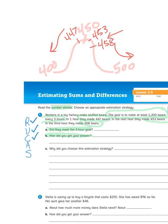So, when I look at those three groups of numbers, 447, 453, and 458, I can see that two of those numbers would round up to five, and one of those numbers would round down to four.